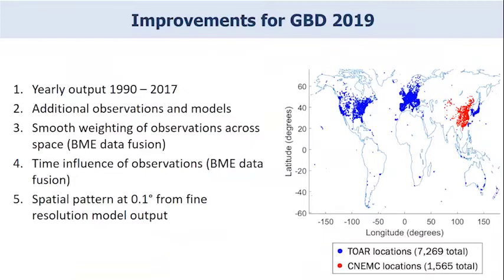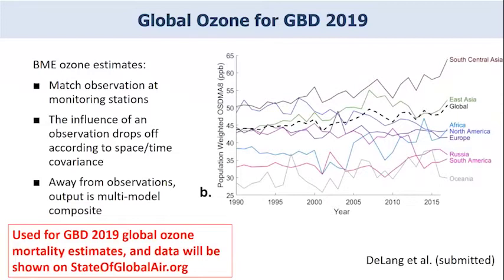We use the Bayesian maximum entropy data fusion method that smoothly weights observations and models through time and space. We also use the NASA fine-resolution model to impose a fine-resolution structure, especially to correctly capture urban patterns because a lot of people live there, and produce output at 0.1-degree resolution. We're really hopeful this will be a resource useful for the community of atmospheric scientists, health effects researchers, and epidemiologists. Basically, we match observations at monitoring stations; the influence of that observation drops off in space and time according to its space-time covariance, and away from observations we tend toward the bias-corrected models.